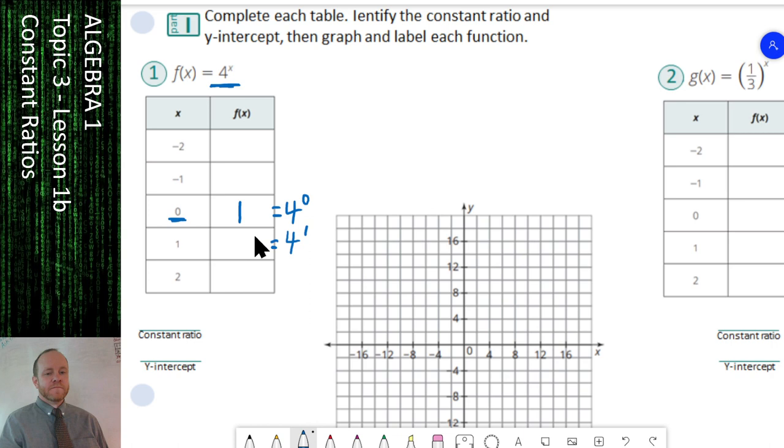Let's keep plugging in our x values. 4 to the 1. 4 multiplied by itself only one time is just 4. We are not taking 4 times 1—that's not what an exponent says—but it ends up being the same as 4 times 1. It's really 4 times itself one time. Now we actually have to do some math. 4 squared, which is really just 4 times itself twice, gives us 16.